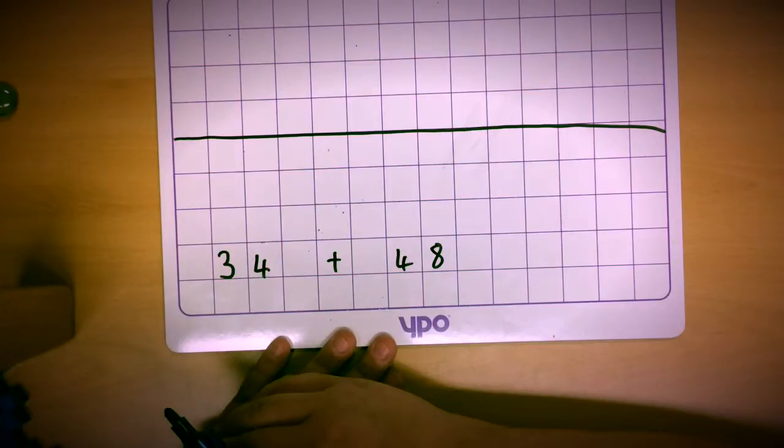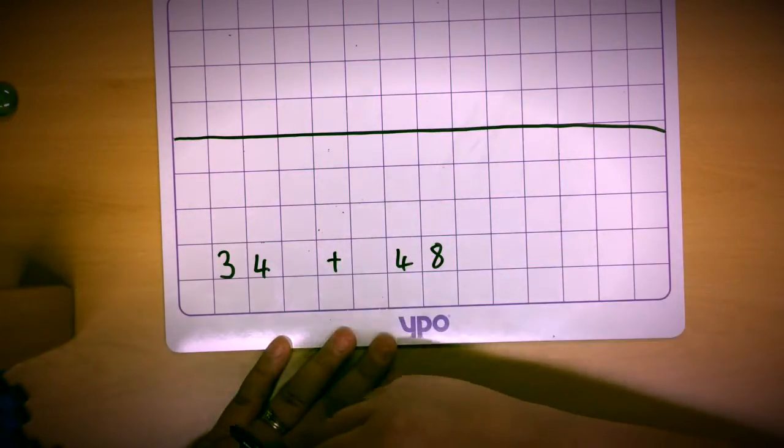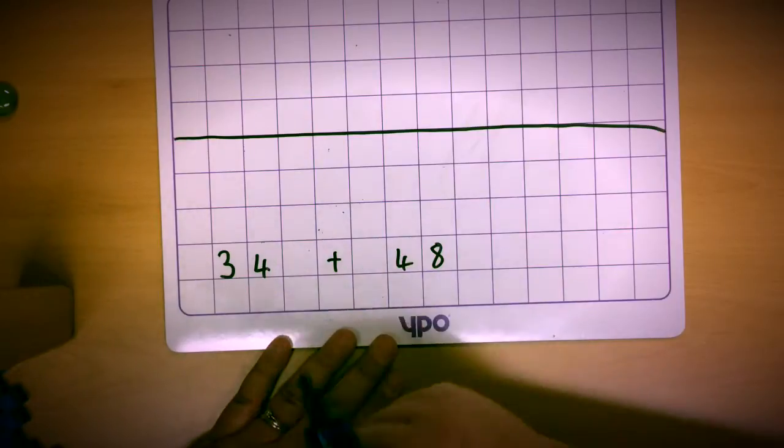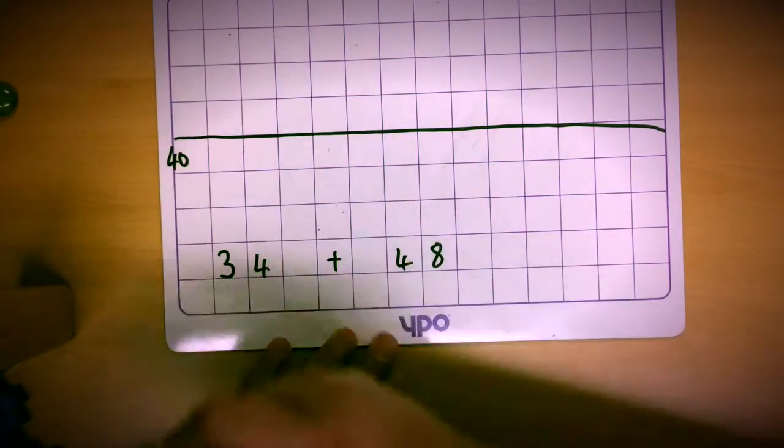They're going to choose one of their tens numbers. We can start with either 30 or 40. It's probably best to start with the biggest number when we add, less counting on for the children so less mistakes will be made. So I will begin with the 40. I'm going to write that 40 at the beginning of the number line.